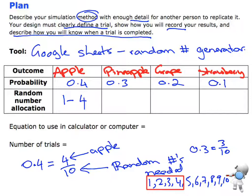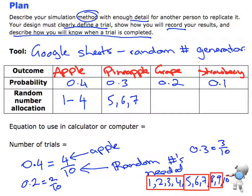Pineapple has a probability of 0.3, which is the same as three out of ten, so I need to allocate three random numbers to that category. I'll take the next three — numbers 5, 6, and 7 — for pineapple. Grape has a probability of 0.2, which is two out of ten, so I allocate the next two: numbers 8 and 9. Strawberry is 0.1 — one out of ten — so it gets the last random number, which is 10.